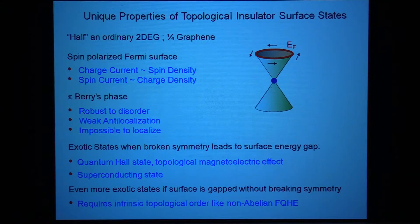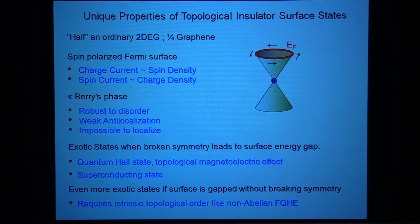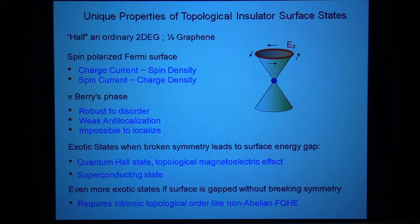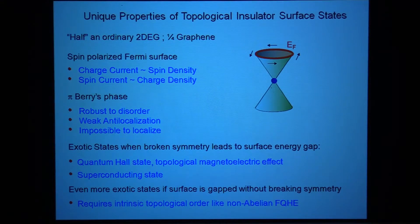You can ask: if I keep both charge conservation (U(1) gauge symmetry) and time reversal symmetry, is it possible to open up a gap at the surface? Without interactions, the answer is no — in the context of topological band theory where interactions can be turned off, it's impossible to gap these surface states. But if you allow strongly interacting states, it is possible, and a symmetry-preserving gapped state would need intrinsic topological order similar to a non-Abelian fractional quantum Hall state.